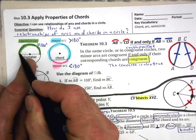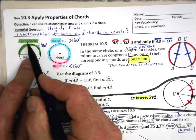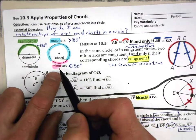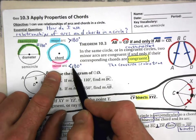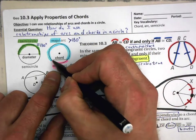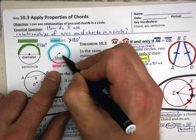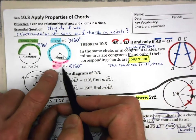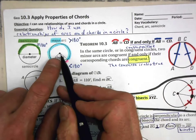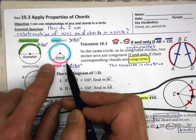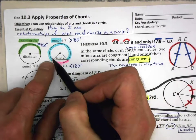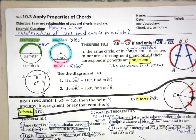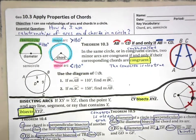Therefore, the arc called a semi-circle is also 180 degrees. A minor arc is less than 180 degrees — here's a central angle that is less than 180 degrees, so the arc it creates is a minor arc. A major arc is greater than 180 degrees.